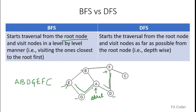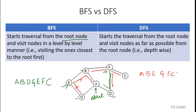In DFS, we start the traversal from the root node and visit as far as we can until we meet a dead end. If we take this graph and do a DFS traversal starting from A, we go towards B, then we go towards E, then G. Now we cannot go from G to A because A we have already visited. So we backtrack and from B, we explore the next unexplored node. We go towards F, from F we go towards C, and from C we go towards D. So the DFS traversal will be A, B, E, G, F, C, D.